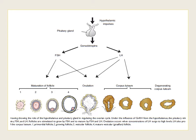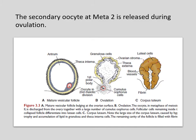Ovulation happens when the concentration of luteinizing hormone becomes elevated, such that the LH would promote the development of the corpus luteum. As the vesicular follicle develops into a mature Graafian follicle, there is an abrupt increase in luteinizing hormone that causes the primary oocyte to complete meiosis 1 to form the secondary oocyte. The follicle enters the pre-ovulatory mature stage and the secondary oocyte undergoes meiosis 2.